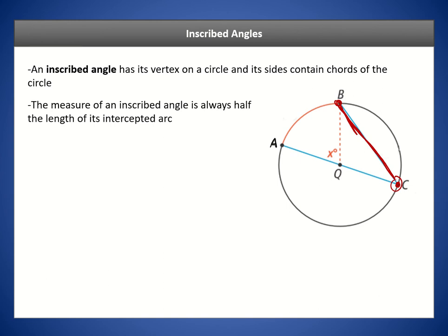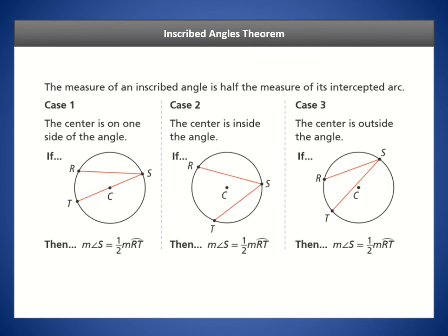The measure of an inscribed angle is always half the length of its intercepted arc. For instance, if the central angle is 50 degrees, the measure of its arc is also 50 degrees. If I know the intercepted arc, I can figure out the measure of the inscribed angle by cutting that arc in half — so this is going to be 25 degrees. That's known as the inscribed angles theorem.